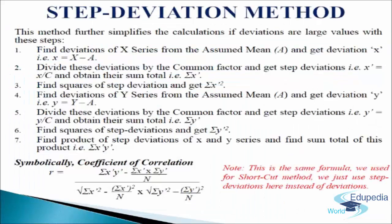Now we come to the step deviation method. This method further simplifies the calculation if deviations are larger values. The following steps are followed. First, we find deviation of series x from the assumed mean a and get x equals to x minus a. Second, we divide these deviations by the common factor and get step deviations, that is x dash equals to x divided by c, and obtain their sum total sigma x dash. Third, we find squares of step deviations and get sigma x dash square.